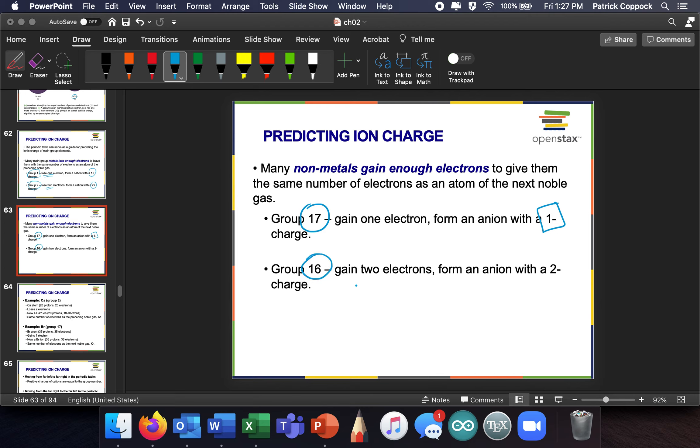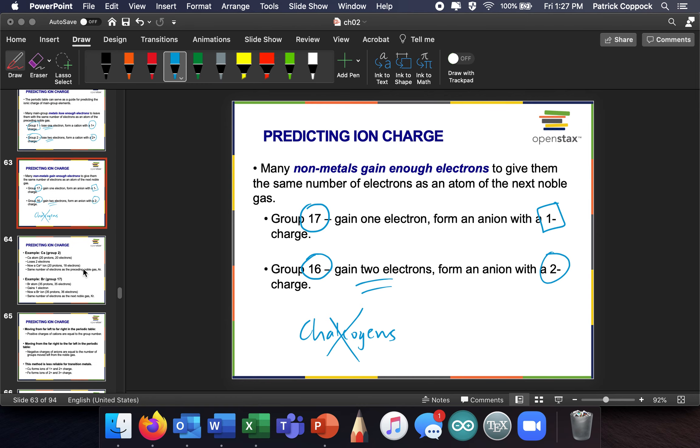Group 16, which I said I wasn't going to say the name of these, gain two electrons. Don't worry about it. Group 16 gains two electrons. They form an anion with a two minus charge.